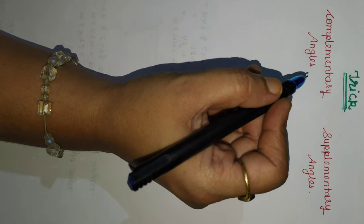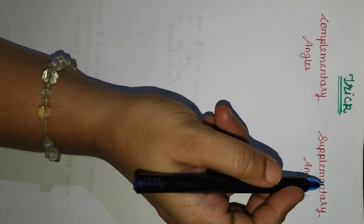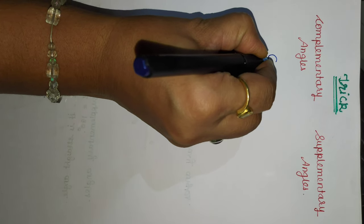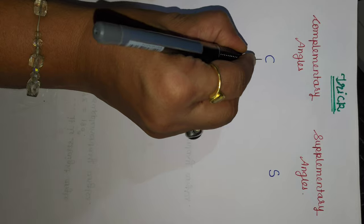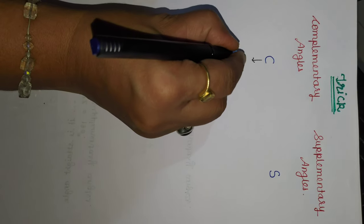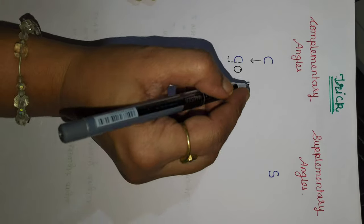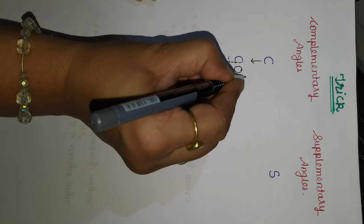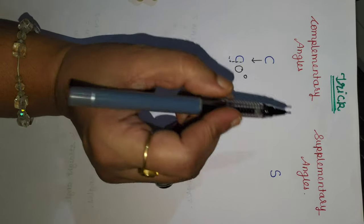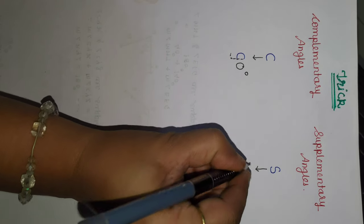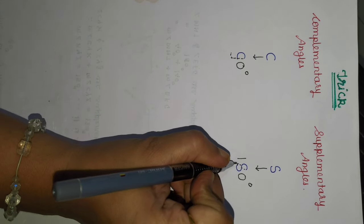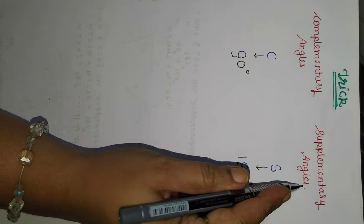Now let us see the trick to remember complementary angles and supplementary angles. For complementary angles, we write C — this C converts into the shape of 9. So when the sum of the measures of two angles is 90 degrees, those two angles are complementary angles. For supplementary angles, we write S — this S converts into the shape of 8. So when the sum of the measures of two angles is 180 degrees, those two angles are supplementary angles.